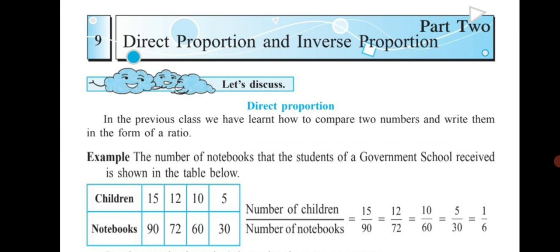As the number of children decreases, the number of notebooks also decreases. So the number of students and the number of notebooks are in direct proportion. In this chapter, we will solve Practice Set 37, which is based on direct proportion.